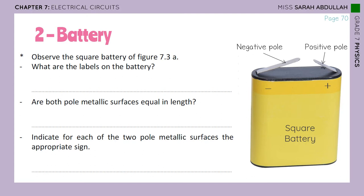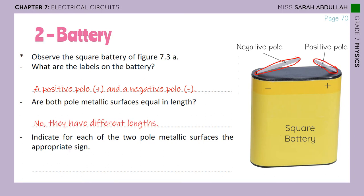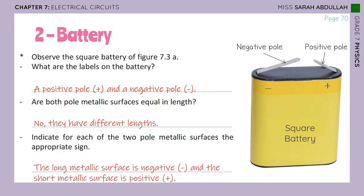Observe the square battery. What are the labels on the battery? The labels are the negative pole and the positive pole. Are both pole metallic surfaces equal in length? No, they have different lengths. The longer surface has a negative sign and the shorter one has a positive sign. So the long metallic surface is negative and the short metallic surface is positive.